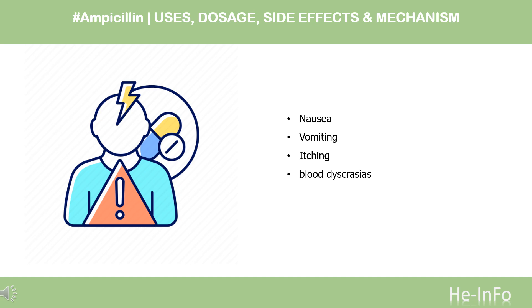The most common side effects, experienced by about 10% of users, are diarrhea and rash. Less common side effects can be nausea, vomiting, itching, and blood dyscrasias. The gastrointestinal effects such as hairy tongue, nausea, vomiting, diarrhea, and colitis are more common with the oral form of penicillin. Other conditions may develop up to several weeks after treatment.